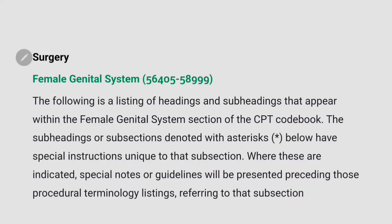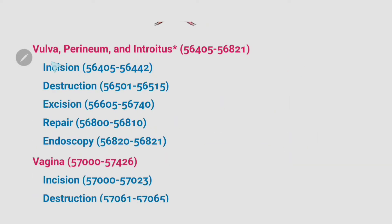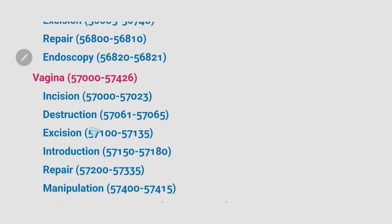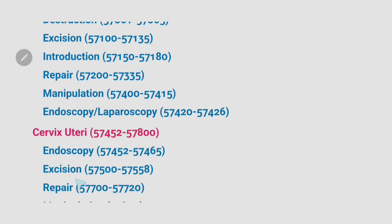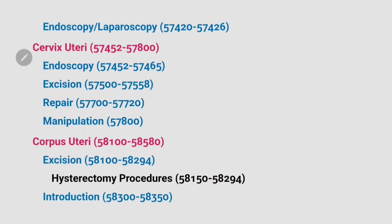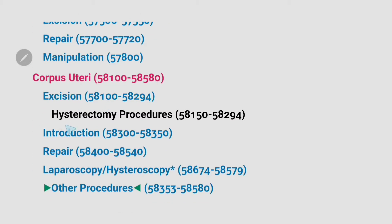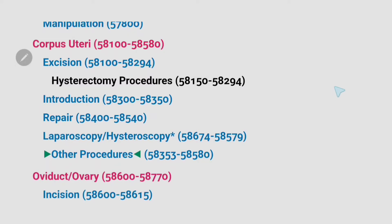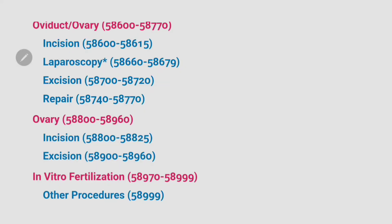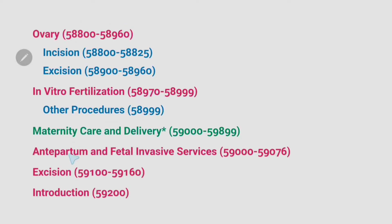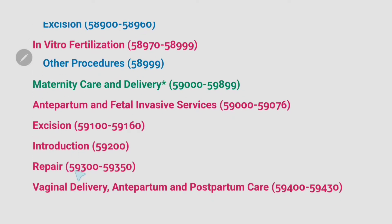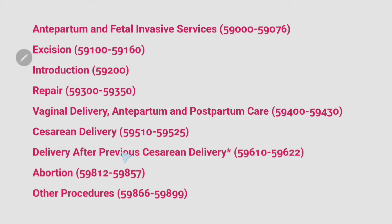This section contains gynecologic procedures as well as codes for maternity care, delivery, and abortion treatment. In this section you can find the codes for vulva and perineum: incision, destruction, excision, repair, endoscopy. Next is vagina: incision, destruction, excision, introduction, repair, manipulation. Next, cervix uteri: endoscopy, excision, repair, manipulation. Next is corpus uteri excision, hysterectomy procedures, introduction, repair, laparoscopy, hysteroscopy and other procedures. Then there are codes for oviduct, ovary, in vitro fertilization, maternity care and delivery, antepartum and fetal invasive services, excision, introduction, repair, vaginal delivery, antepartum and postpartum care, caesarean delivery codes, delivery after previous caesarean delivery.